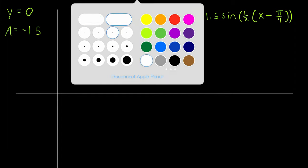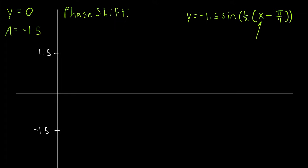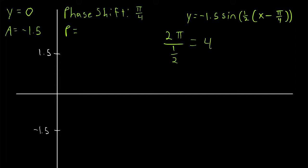Since the amplitude is negative 1.5, we mark 1.5 units above and below the midline on the y-axis — that's 1.5 and negative 1.5. The phase shift is pi over 4, since the 1/2 has been factored out and x has a coefficient of 1. The period P is 2 pi divided by 1/2, which equals 4 pi — our period is stretched out because x is multiplied by one half.